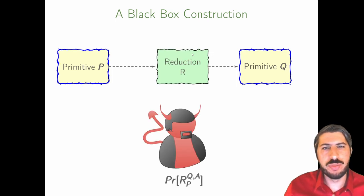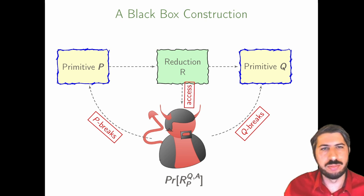Well, the bread and butter of cryptographers worldwide is defining a reduction R and aiming for a proof by contradiction. Namely, if the adversary can break P, there is an adversary via a reduction R that can break the instantiation of Q. Namely, we say that the reduction is black box as it has no internal access to the workings of the adversary or the primitive.